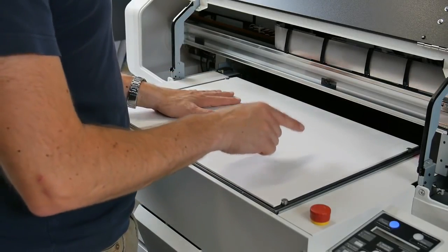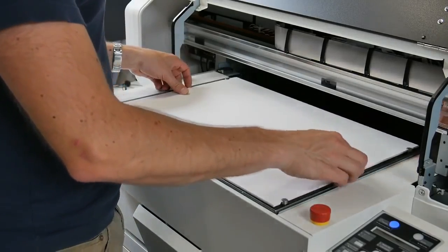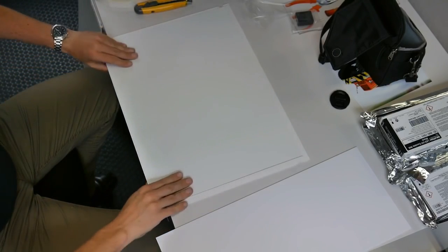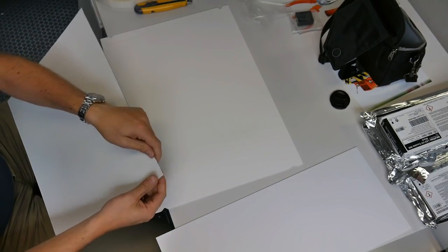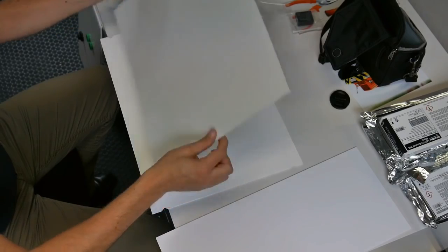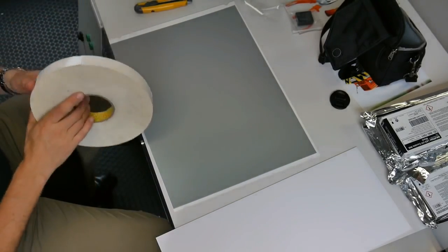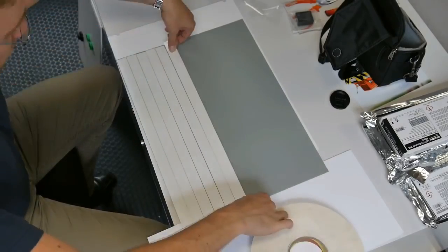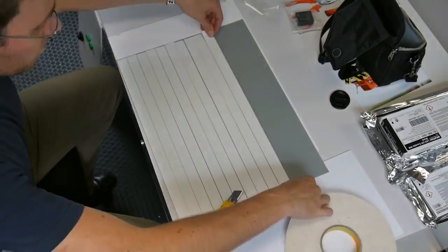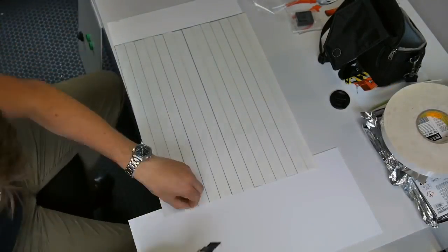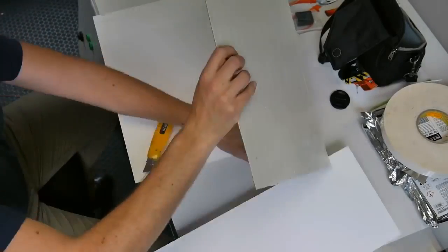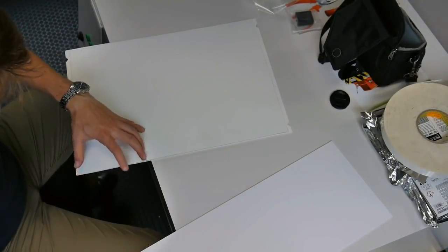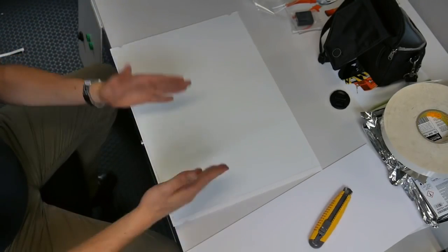Okay now we will continue by mounting the steel plate. Let me bend this one a little bit over. Okay mounting this on the foam PVC by using double backing tape. And we are done.